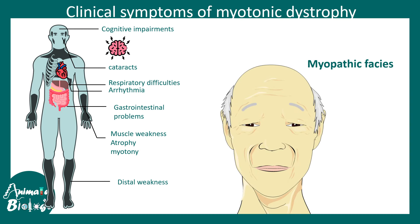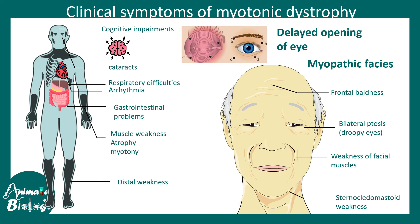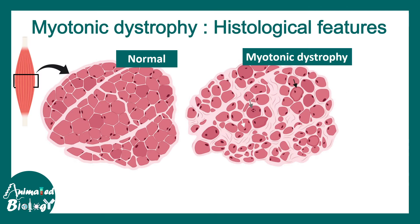The facial features are pretty distinct because there is something called myopathic facies — there would be weakening of the facial muscles or the muscles used for mastication of food. There could also be frontal baldness, which is characteristic of patients with myotonic dystrophy. Additionally, there could be drooping of the eyelids — technically known as bilateral ptosis — and sternocleidomastoid weakness, leading to chances of more neck pain. Since the muscles around the eyes are weakened, there could be delayed opening of the eye.